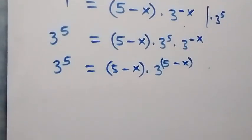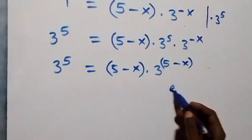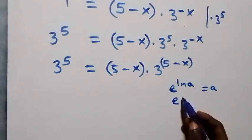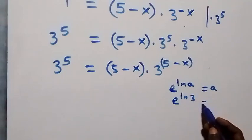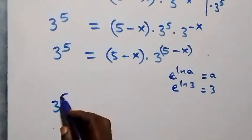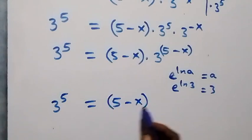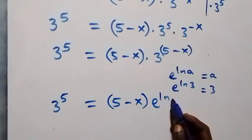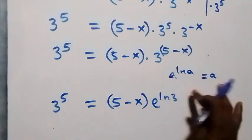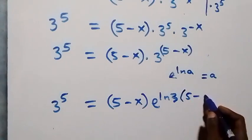Here we can write from when we have exponent ln a, the same as a — that means three can be written as exponent ln three, and that is the same thing as three. So let's write this now: we see three raised to power five equals five minus x in brackets, then times exponent ln three, which is also multiplied by exponent ln three times five minus x.